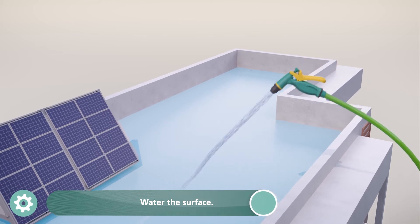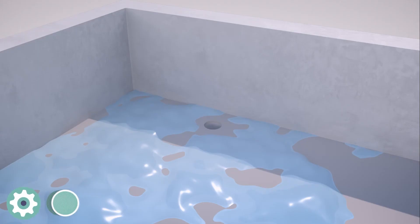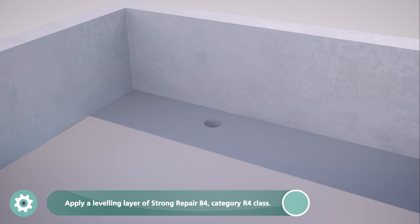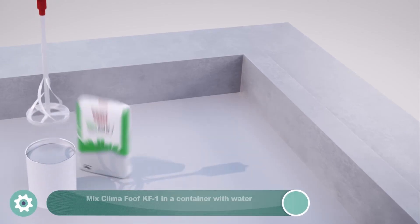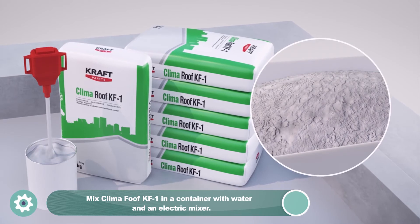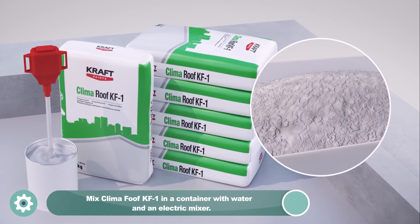Prior to application, the surface is checked for stagnant water. It is recommended that a leveling layer of Strong Repair 84 Category R4 class mortar be applied which can be formed in slope. The first material of the system is Klima Roof KF1, cementitious fluid adhesive and sealing mortar.